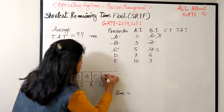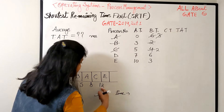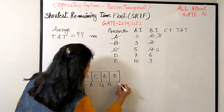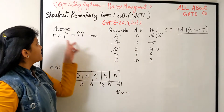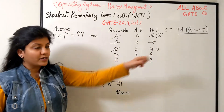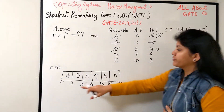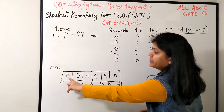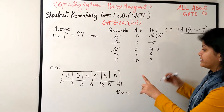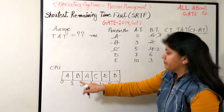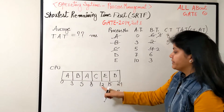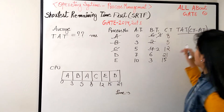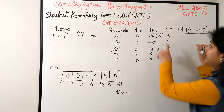Among the remaining processes, E is smallest needing three bursts, so twelve plus three is fifteen. Last is process D needing six bursts: fifteen plus six is twenty-one. Now find the average turnaround time using completion times. Process A completes at eight - look at the last scheduling instance, not the first. B completes at five, C at twelve, D at twenty-one, E at fifteen.